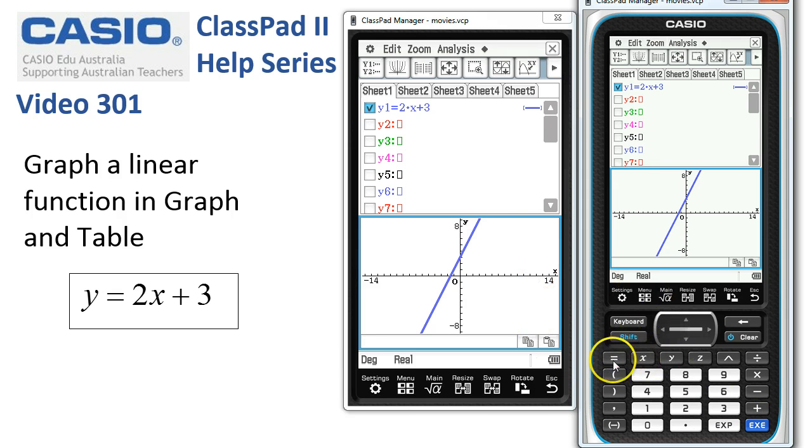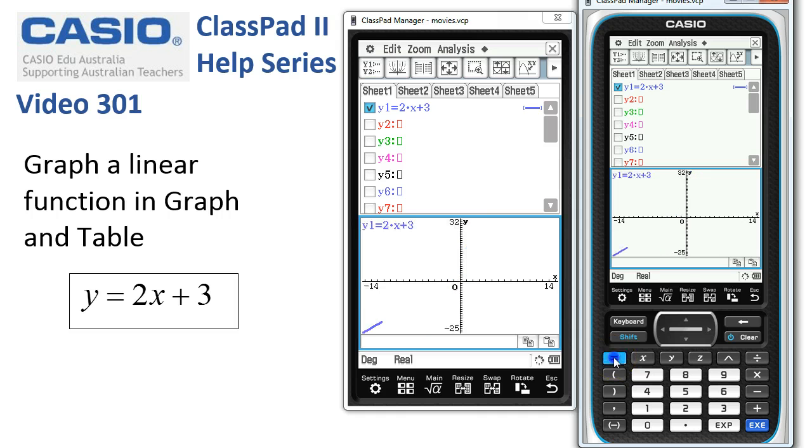And last of all is the equals key here. If I tap on the equals, that's an auto scale, which doesn't change the x-axis, but it automatically scales the y-axis to fit the domain of the function.